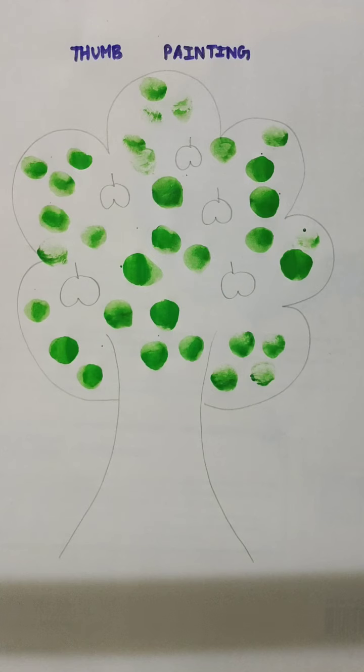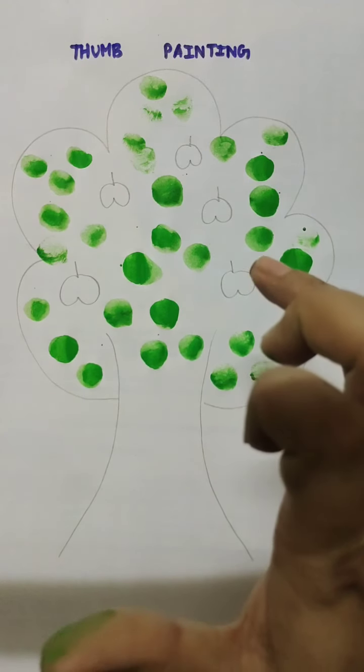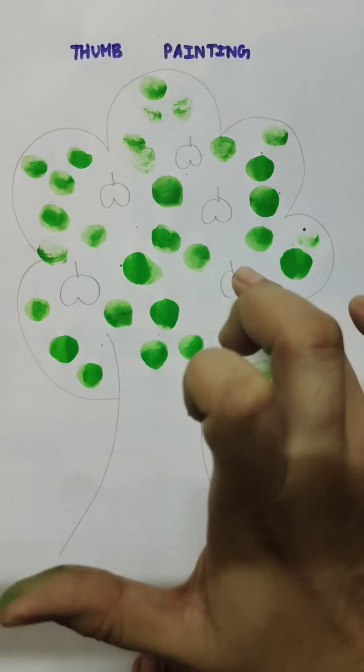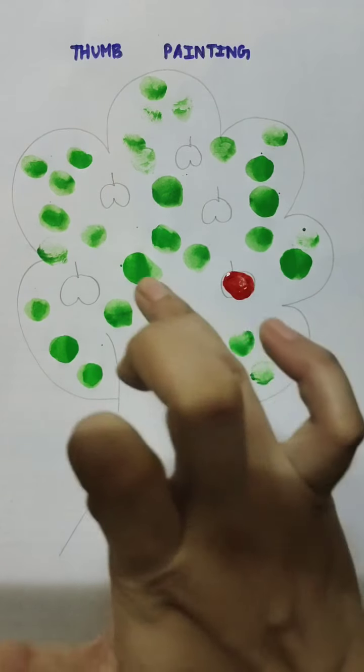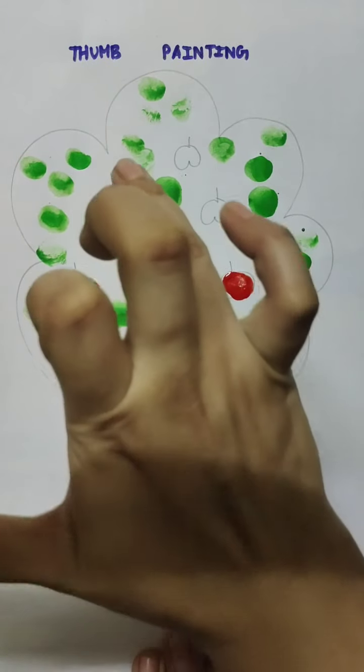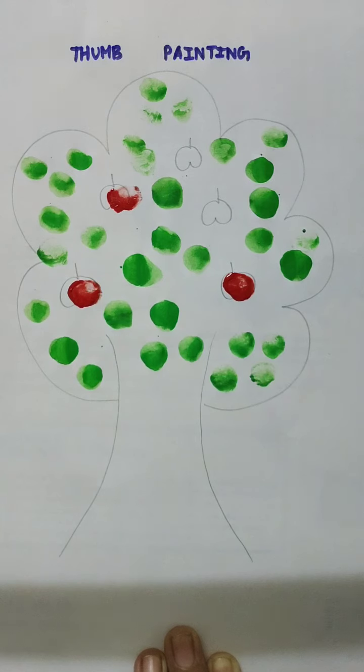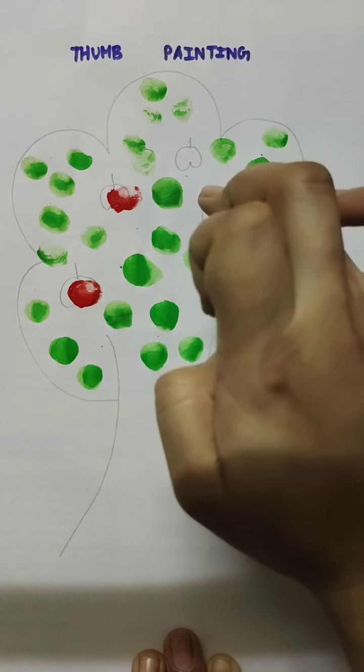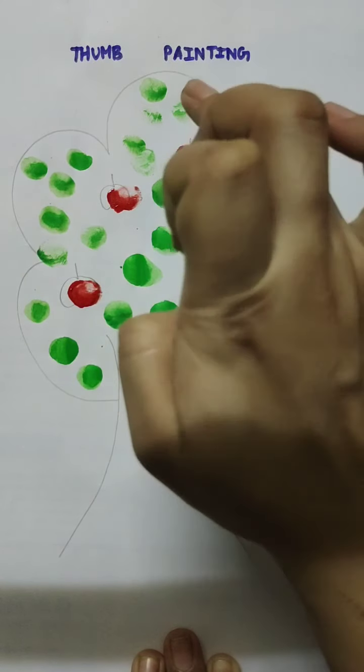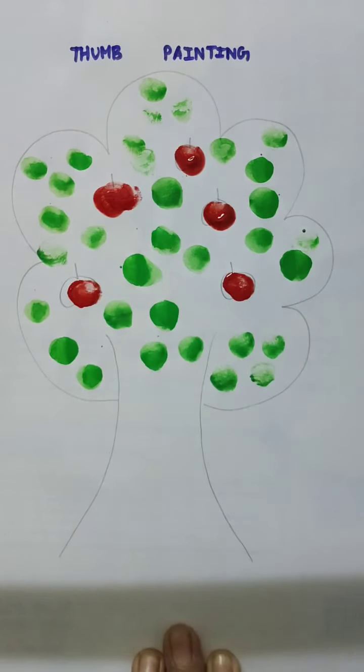I will use red color to thumbprint and paint my apples. The first one, the second one, the third one, then the fourth one, fifth one.